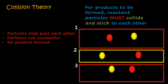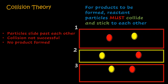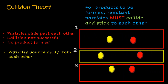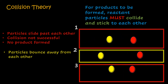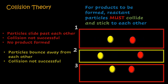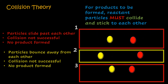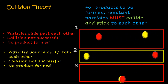In scenario two, we can see that the particles collide, but they bounce away from each other — they did not stick. For that reason, we can say that the collision was not successful. The collision occurred, but it wasn't successful, and therefore no product was formed.